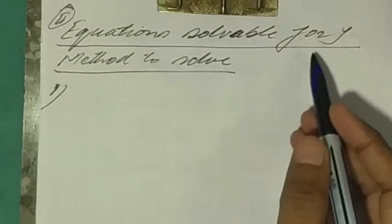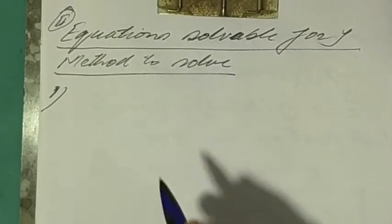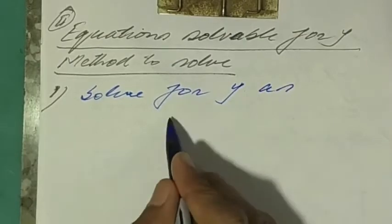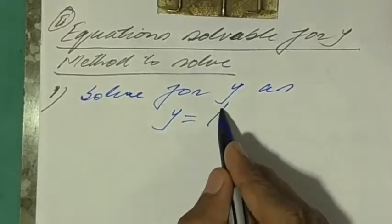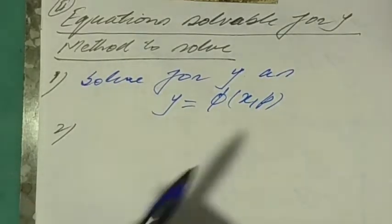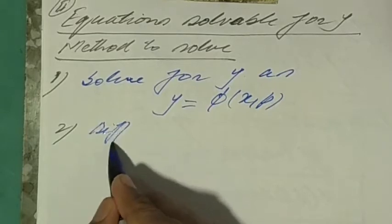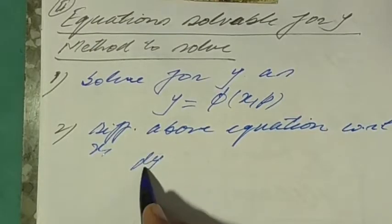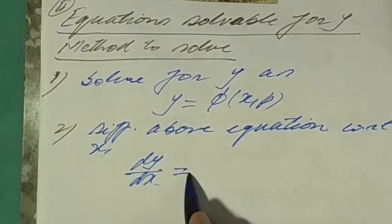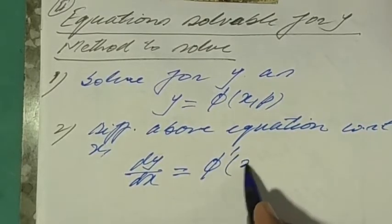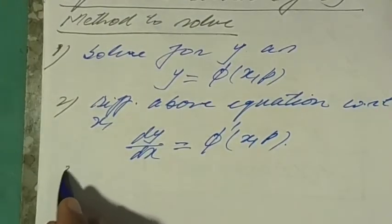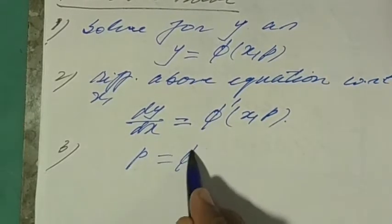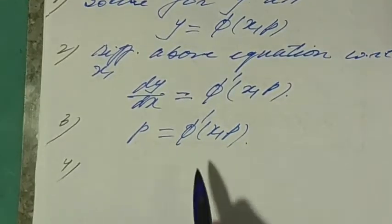The second type is equations solvable for y. Step 1: solve for y as y = φ(x, p). Step 2: differentiate the above equation with respect to x to get dy/dx = φ'(x, p). Step 3: substitute dy/dx = p into this equation to get p = φ'(x, p).